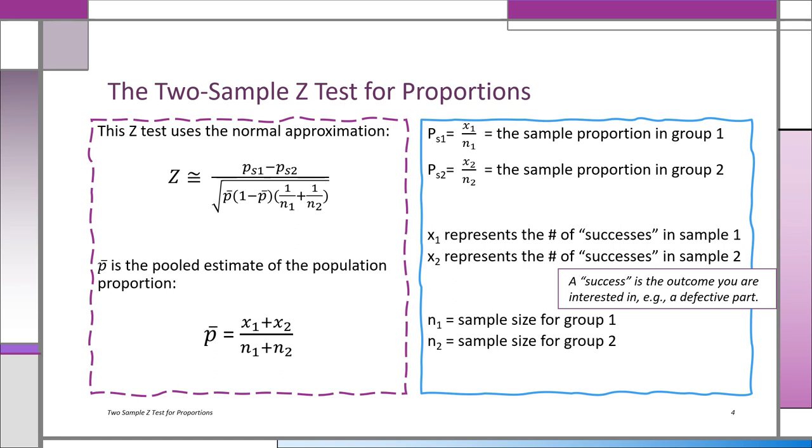The formula you see over there: the sample proportion from group 1 minus the sample proportion from group 2, and so on.